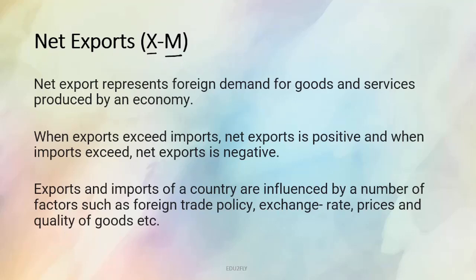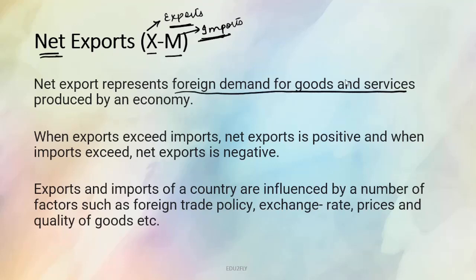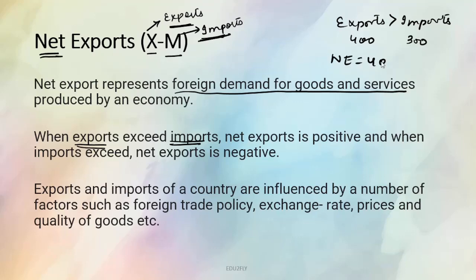Next is our net exports, which is exports minus imports. Yahaan pe X minus M hum dekh rahe hai — X means exports, M means imports. Toh jahaan pe bhi net aata hai, net ka matlab hum kisi do cheezon ko minus kar rahe hai. So net exports ka matlab hai exports mein se imports ko minus kar rahe hai. It refers to the foreign demand of goods and services. Jab exports imports se zyaada hote hai, tab net exports positive hai — for example, exports 400 crores ka, import 300 crores ka, toh net exports 400 minus 300 = 100 crores, jo positive value hai.